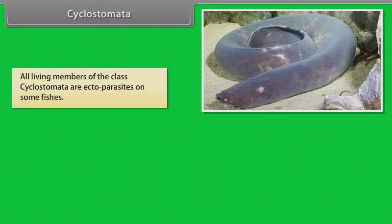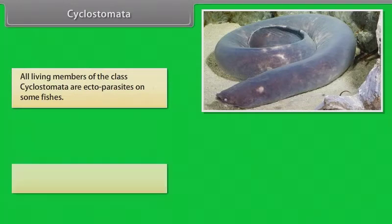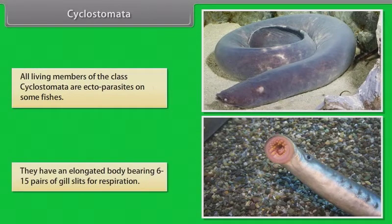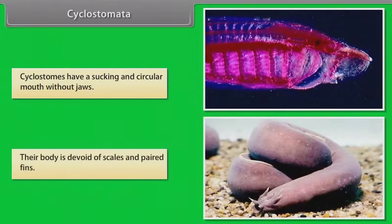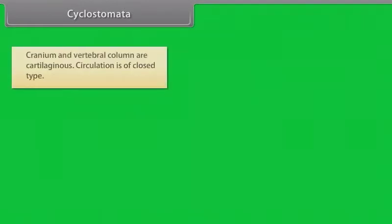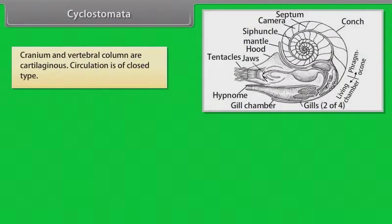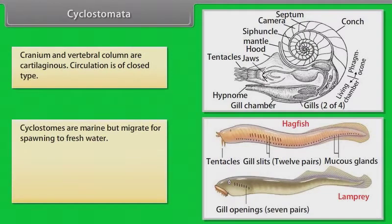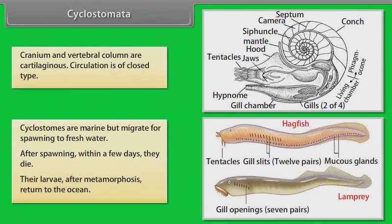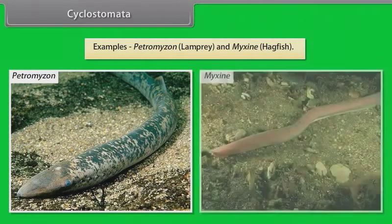All living members of class Cyclostomata are ectoparasites on some fishes. They have an elongated body bearing six to fifteen pairs of gill slits for respiration. Cyclostomes have a sucking and circular mouth without jaws. Their body is devoid of scales and paired fins. Cranium and vertebral column are cartilaginous. Circulation is of closed type. Cyclostomes are marine but migrate for spawning to fresh water. After spawning, within a few days, they die. Their larvae, after metamorphosis, return to the ocean. Examples: Petromyzon (Lamprey) and Myxine (Hagfish).